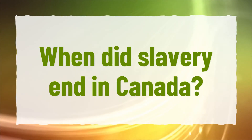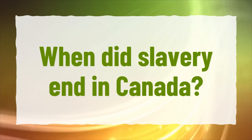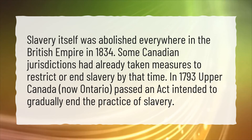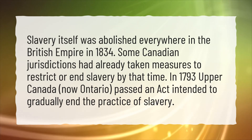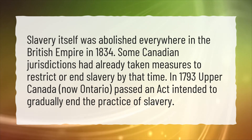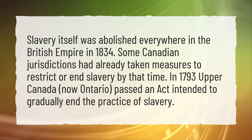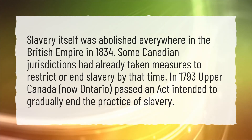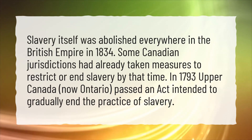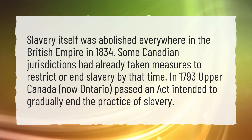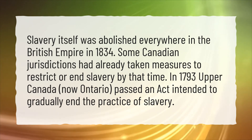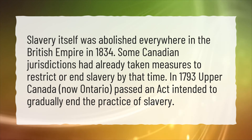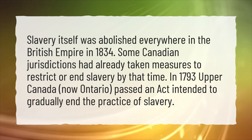When did slavery end in Canada? Slavery itself was abolished everywhere in the British Empire in 1834. Some Canadian jurisdictions had already taken measures to restrict or end slavery by that time. In 1793, Upper Canada, now Ontario, passed an act intended to gradually end the practice of slavery.